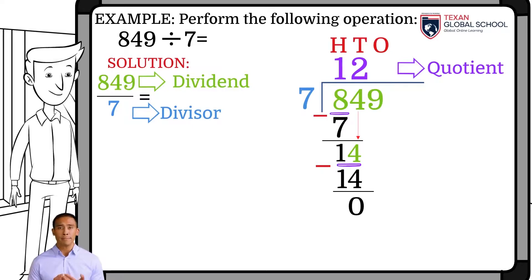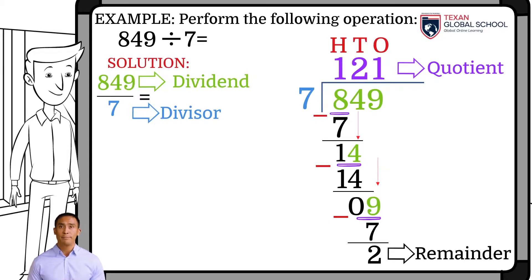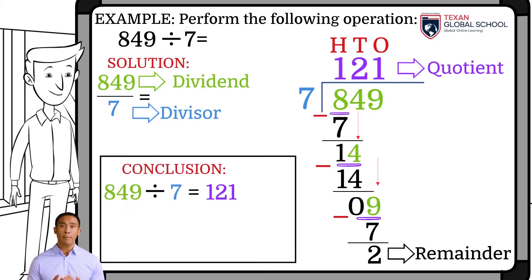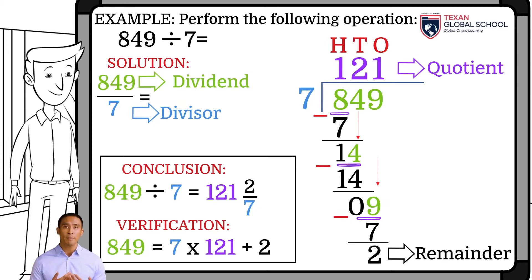And repeat the process. We can see that the divisor 7 is contained 1 time in the dividend 9, which is placed in the quotient above the galley in the 1's column. Now, multiply this 1 of the quotient by the divisor 7, and place the result below the dividend. Subtract 9 minus 7, and the remainder 2 is placed in the same 1's column. We conclude that 849 divided by 7 equals 121. But since the remainder is different from 0, the remainder is represented as 2 over the divisor 7. We can verify using Euclid's lemma. So, 849 is equal to the product of the divisor 7 with the quotient 121, plus the remainder 2.